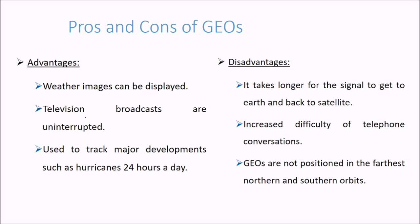The advantages and disadvantages of GEOs. Advantages first: weather images can be displayed, television broadcasts are uninterrupted, and this is used to track major developments such as hurricanes 24 hours a day, round the clock.